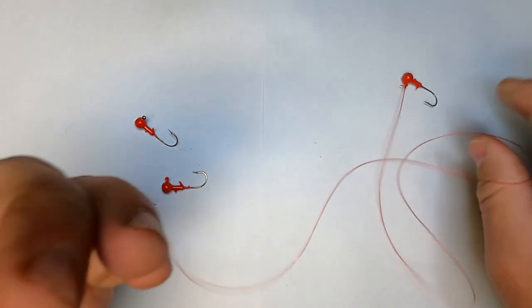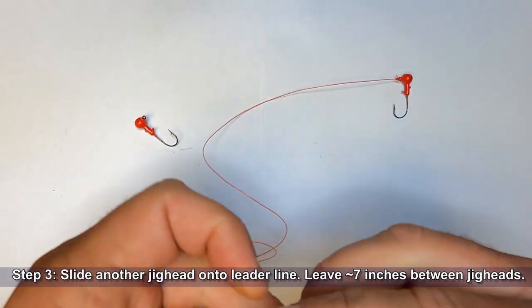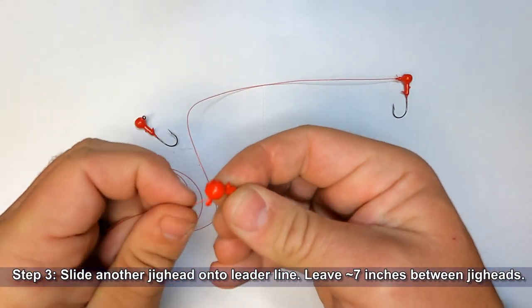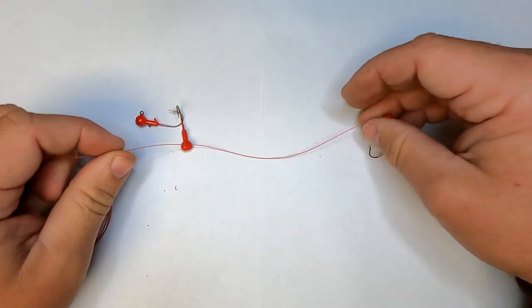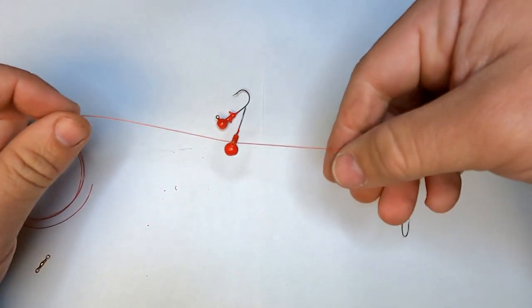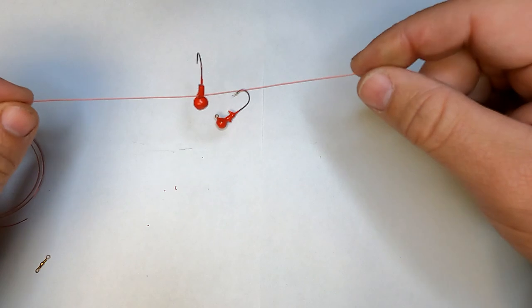Now we're going to go to the other end of our leader line here and we'll go ahead and put another jig head on there. How far apart the jig heads are is completely up to you. We're going to go somewhere in the neighborhood of six or seven inches.